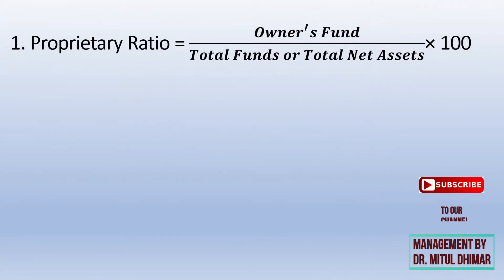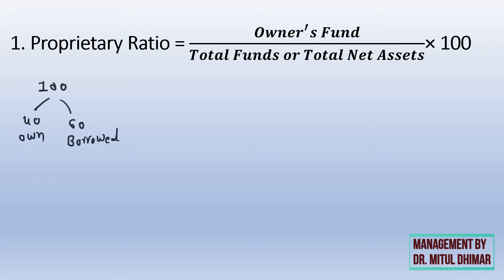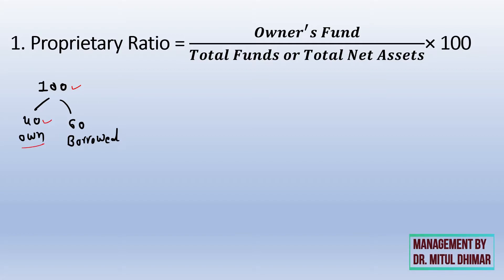The first is proprietary ratio. This ratio indicates the proportion of owner's fund out of total fund. As discussed, we can run a business either with our own money or with borrowed money. Out of the total money collected for our business, how much is our own money — that is the proprietary ratio. For example, if I have collected 100 rupees, out of which 40 rupees are my own and 60 rupees are borrowed, my proprietary ratio will be 40%.